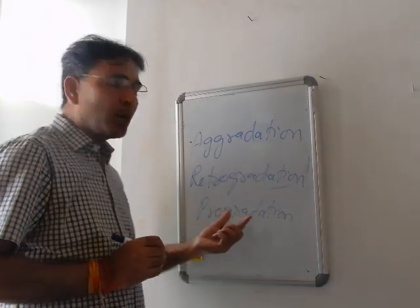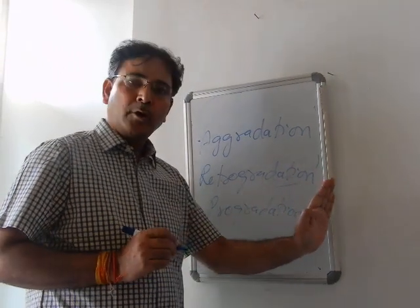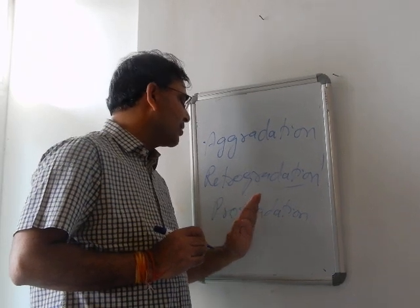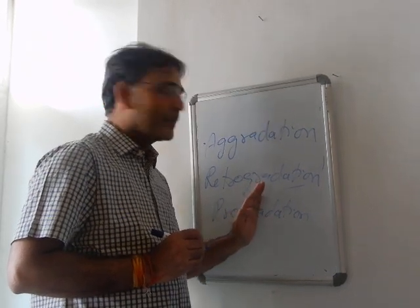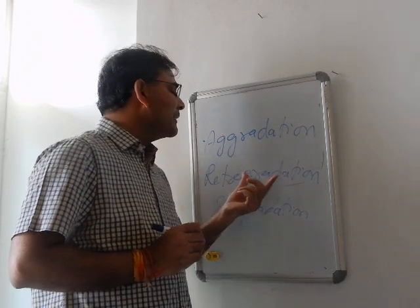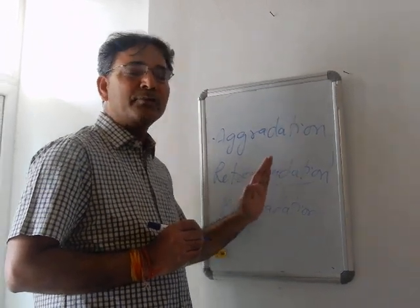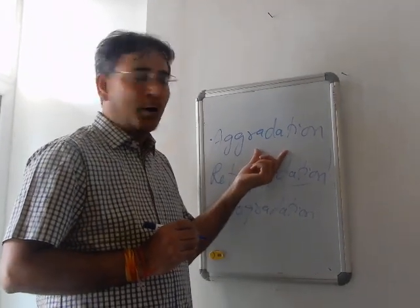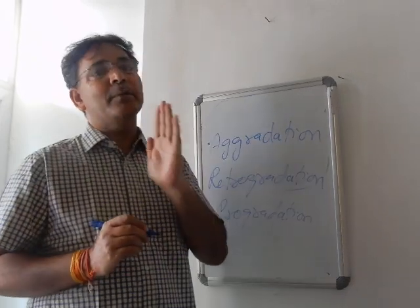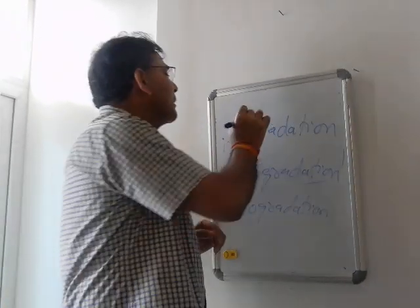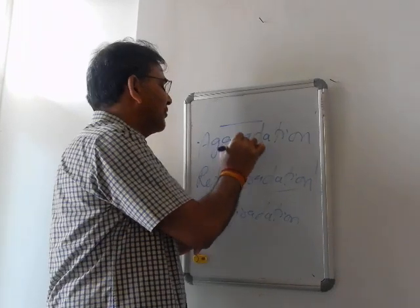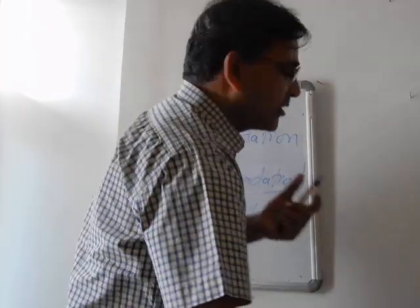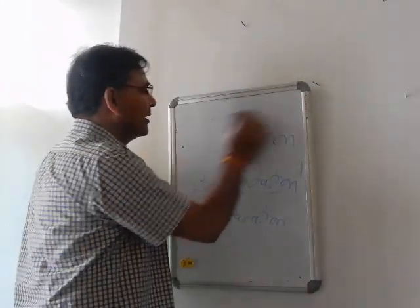In the case of progradation, the shoreline shifts towards the ocean and it is characterized by shallow water facies at the top. Retrogradation is that stacking pattern in which the shoreline shifts towards land and it is characterized by deep water facies at the top. Aggradation is characterized by a constant shoreline, but in this stacking pattern vertical thickening is taking place — meaning the thickness of the beds is increasing.